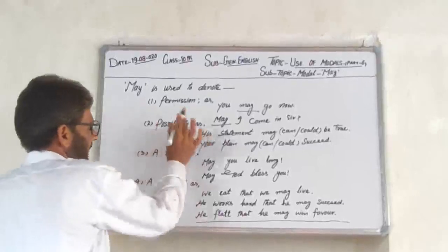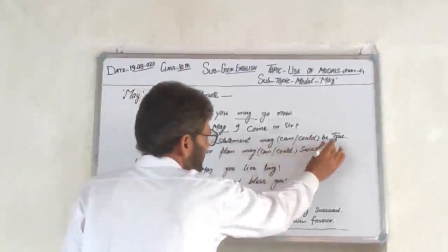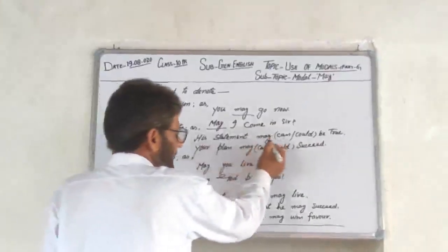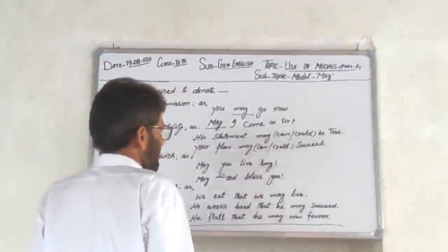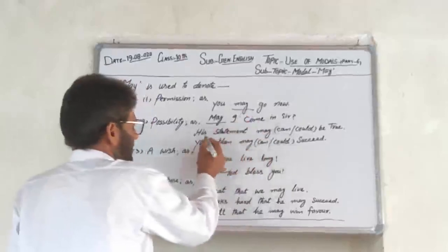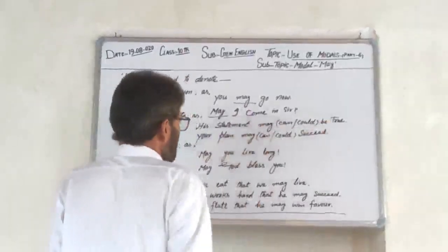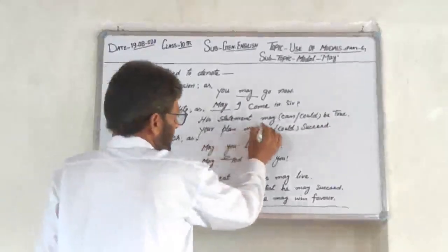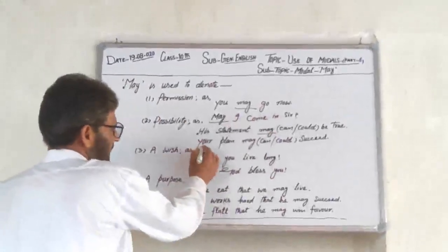Number two — Possibility. جیسے 'His statement may be true.' Dear students, یہاں خیال رکھیں کہ ہم 'can be' یا 'could be' بھی استعمال کر سکتے ہیں، لیکن ہم یہاں Modal May کے ساتھ کام کر رہے ہیں۔ تو یہاں پے Possibility ظاہر ہوتی ہے، اس لیے ہم May کا استعمال کرتے ہیں۔